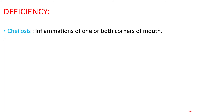Now, the deficiency of Vitamin B2: one deficiency is inflammation of one or both corners of the mouth. The corners develop a reddish color and become inflamed. This is one of the deficiency conditions of Vitamin B2.